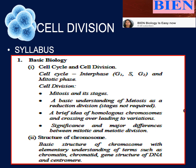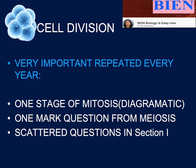The most important and repeated questions from cell division are asked every year — that means a hundred percent, a five-marker question is going to be there in the paper. One stage of mitosis is going to appear for sure — it's essentially a diagrammatic question where a stage is drawn and you are asked questions from that stage, plus some additional questions. One-marker questions from meiosis can also be scattered throughout Section 1.